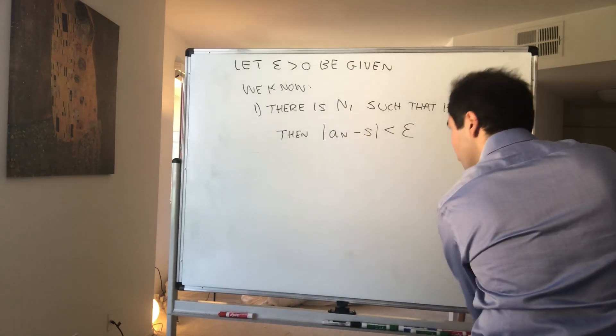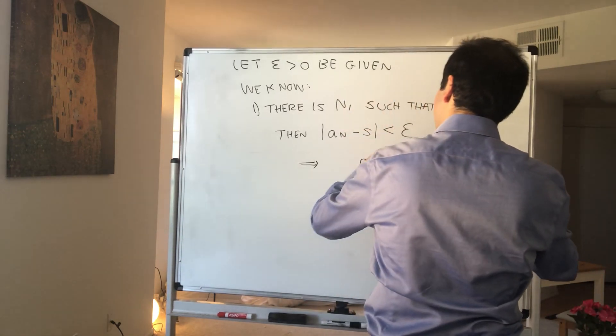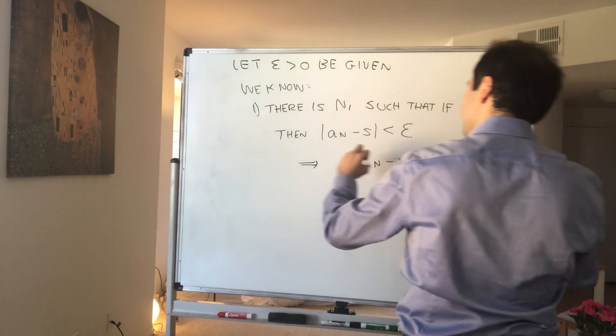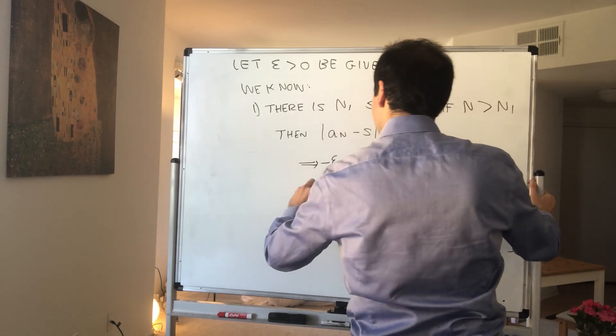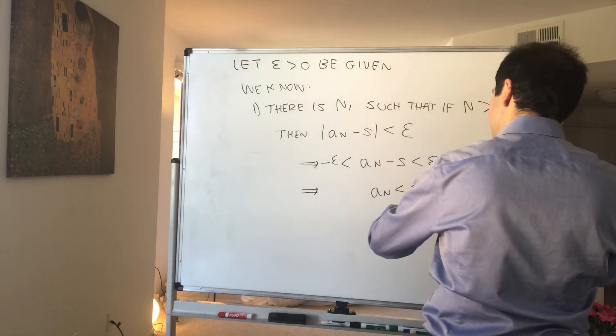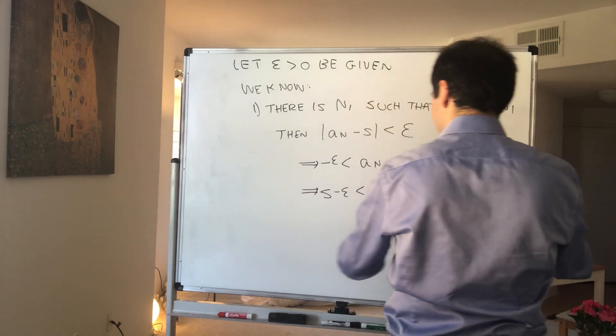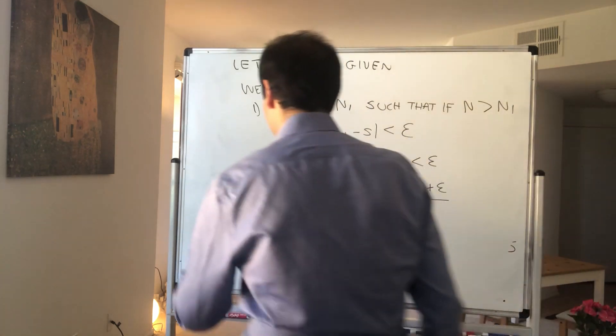Which again, let's write this in terms of inequalities. This means a_n minus s is between -epsilon and epsilon, and so a_n is between s + epsilon and s - epsilon. We'll need this in a second.